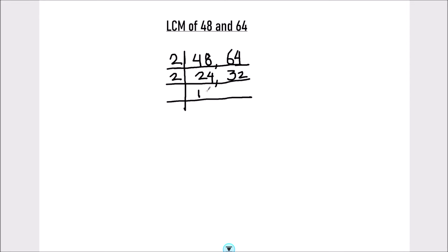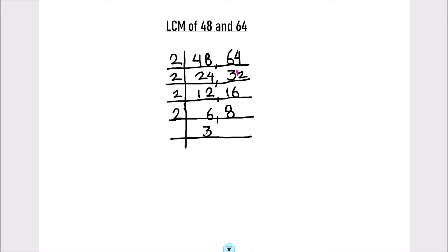2 times 1 is 2, 2 times 2 is 4. 2 times 1 is 2, then 1 is remainder. This becomes 12. 2 times 6 is 12 and 2 times 8 is 16. 2 times 3 is 6 and 2 times 4 is 8.